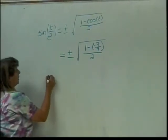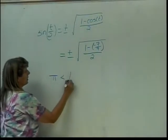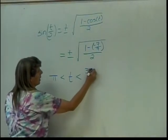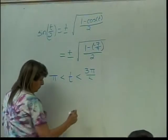So I have this information: pi is less than T is less than 3 pi over 4. 3 pi over 2, sorry.